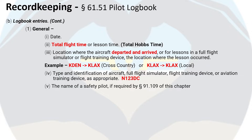The general section of the logbook contains the date of the flight or training. It also consists of the total flight time, which is from engine start to engine shutdown, also known as Hobbs time, the location where the aircraft departed from and arrived at. Here's a sample entry of a flight from Denver to Los Angeles for a local flight in the Los Angeles area. The type and identification of the aircraft, also known as a tail number — in this case November 123 Delta Charlie — and the name of the safety pilot if required.